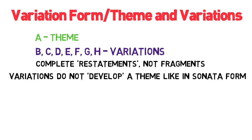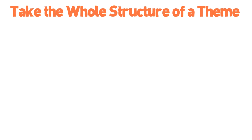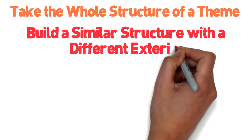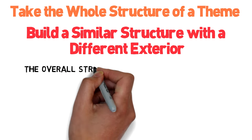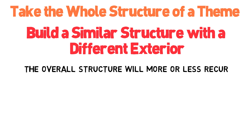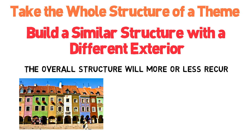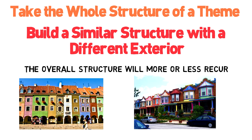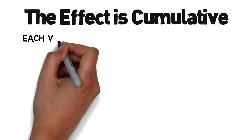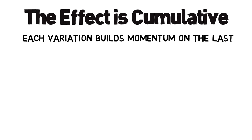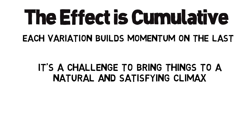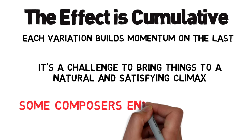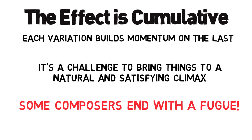Variations are not concerned with developing the theme in terms of breaking it up and reconstructing it. To make a variation in the classical sense is to take the whole structure of a theme and then build a similar structure with a different exterior. Unlike with sonata form developments, in a variation you might not always be able to recognize the actual theme, but the overall structure will more or less recur so you can recognize it as a variation — think of it like lots of different houses with very similar architecture but with slight surface-level alterations. The effect of variation form is cumulative: each variation builds momentum on the last, taking us through all kinds of changes in tempo and emotion, and some composers even end their variations with a fugue on the theme for a final knockout punch.